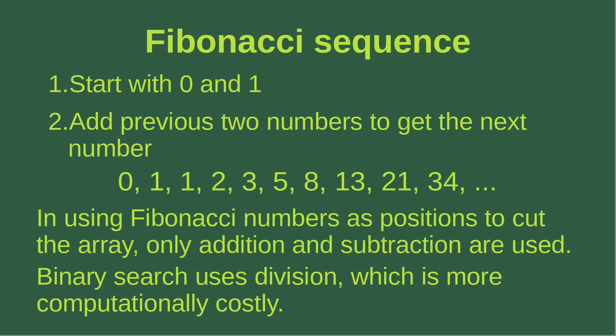Now let us see the meaning of the Fibonacci sequence. To set up a Fibonacci sequence, I start with two numbers: 0 and 1. Then I add up the two numbers to get the next number. So 0 plus 1 gives 1, then 1 plus 1 gives 2, 1 plus 2 gives 3, 2 plus 3 gives 5, and so on.